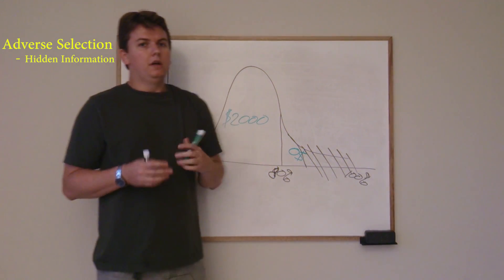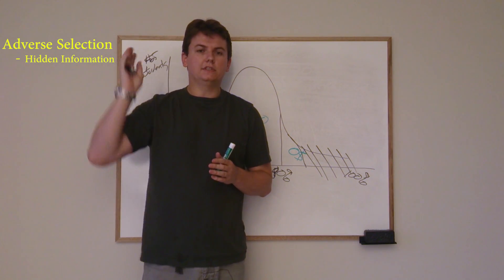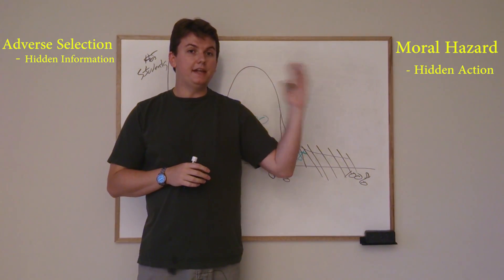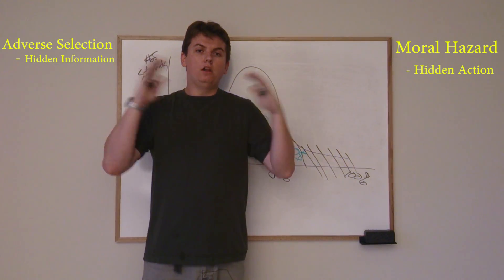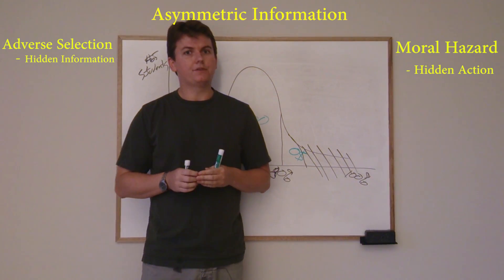So that hidden information we've seen, that's the problem of adverse selection. Over here we have the hidden action that is the problem of moral hazard, that causes moral hazard. And all of that is the problem of asymmetric information.